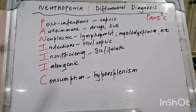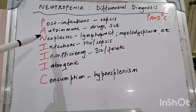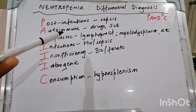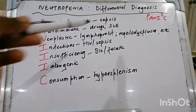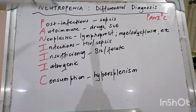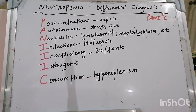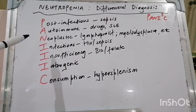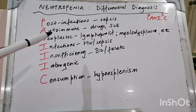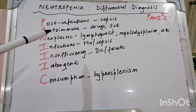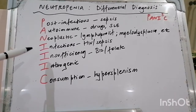What causes neutropenia? There are many causes. Post-infectious neutropenia is common in the setting of overwhelming sepsis. Autoimmune etiologies can be drug-induced or due to systemic lupus erythematosus — cytopenia is indeed one of the SLICC criteria for SLE diagnosis, and neutropenia can form part of that spectrum. Neoplastic causes include lymphoproliferative disorders, myelodysplasia, leukemias, and bone marrow infiltration.